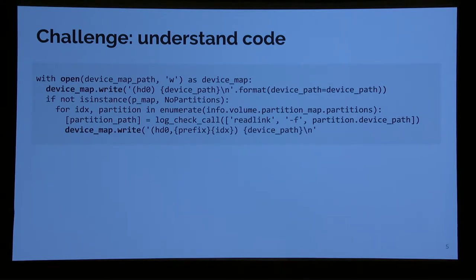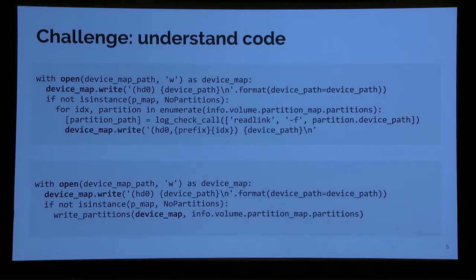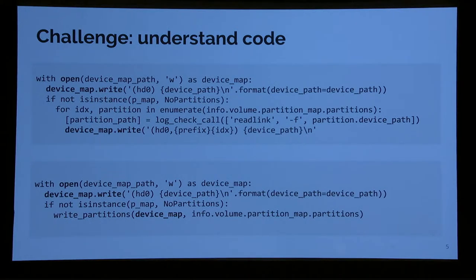But there is a challenge here, which is to understand code. What I showed before as abstraction is how the code actually looks on GitHub. You have to understand what 'with' means, and there is a write, and then there are loops and things that mostly don't matter for the question. The challenge can be even more serious because that code is not very readable for humans. There's a call to another function, write_partitions, which does what the loop was doing — so you have to understand interprocedurally what happens.